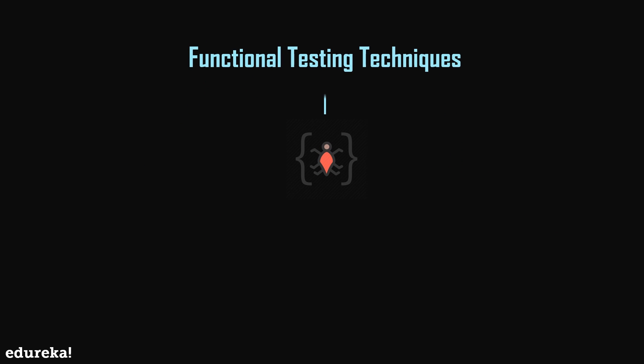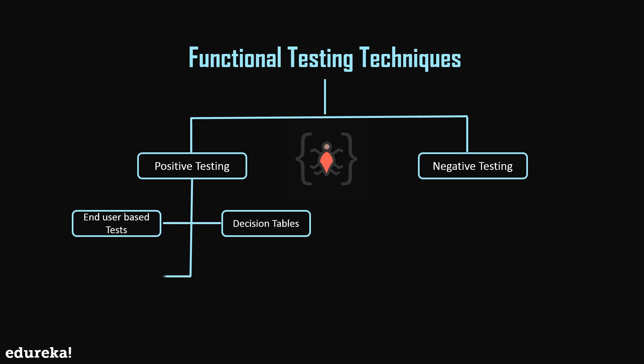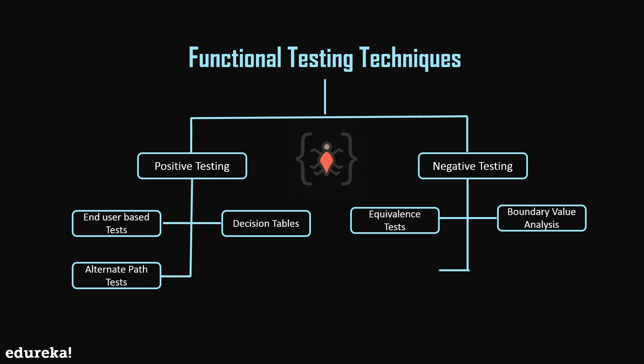Now let's have a look at the different functional testing techniques. There are two main techniques: positive testing and negative testing. In positive testing, we have end user based or system tests, where the system under test may have many components which when coupled together achieve the user scenario. Then we have decision based tests, which are centered around the possible outcomes of the system when a particular condition is met. Alternate flow tests are run to validate all the possible ways other than the main flow to accomplish a function.